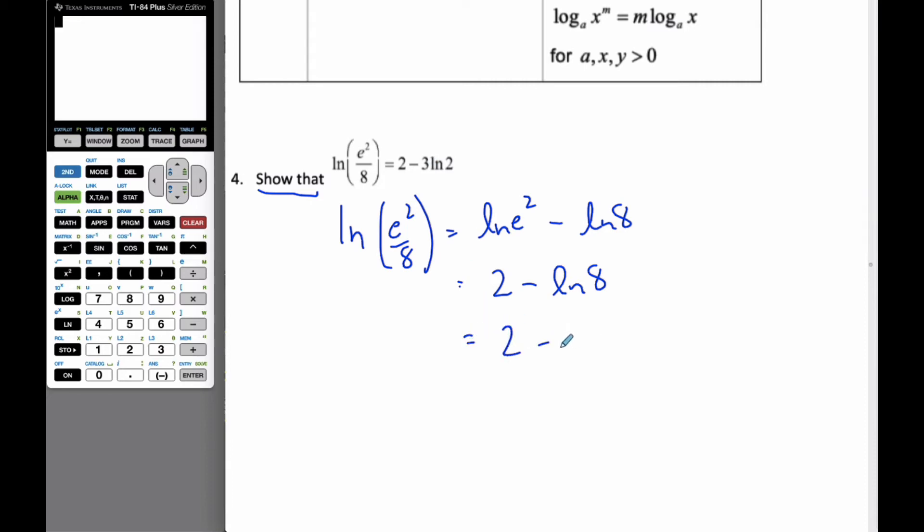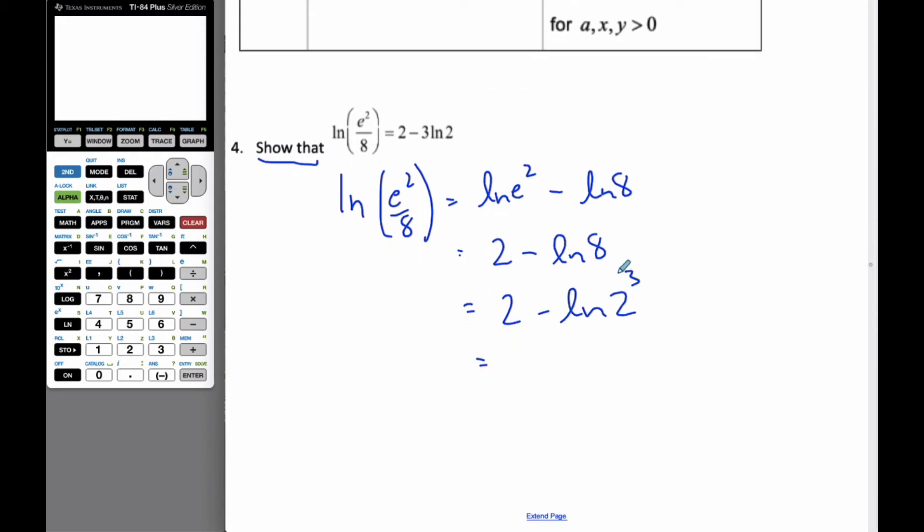What I recognize is that ln 8 is the same as 2 to the power 3. Using the properties, I can pull the 3 down to the front, and so now I can show that these two are the same things. So this kind of question is just to get us used to using the properties and manipulating.